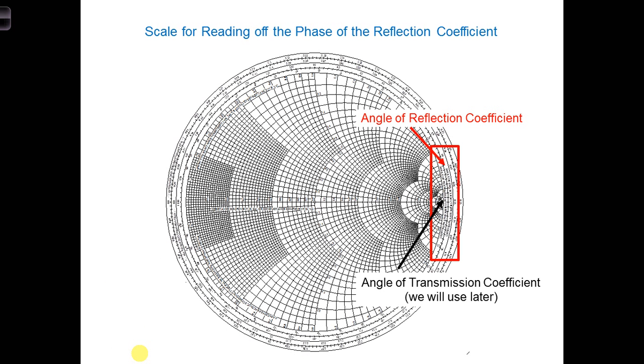Now that was just for the magnitude of the reflection coefficient. The reflection coefficient can be a complex number, so it can also have a phase associated with it. For the angle of the reflection coefficient, we will use one of the inner two scales along the outside of the Smith chart. Use the scale labeled angle of reflection coefficient in degrees.